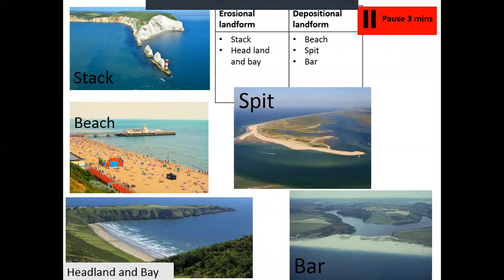The erosional landforms are stacks and headland and bay. If erosion hadn't happened, all of this would have been limestone — there'd be no gaps between these stacks. The waves hit against the stacks and taken away bits of rock, eroding it away. For headland and bay: if erosion hadn't happened, there wouldn't be a beach here — the land would extend all the way out and the sea wouldn't start until much further. The destructive waves have broken down the rock, removed it, and created the bay. So the headland and bay are erosional.